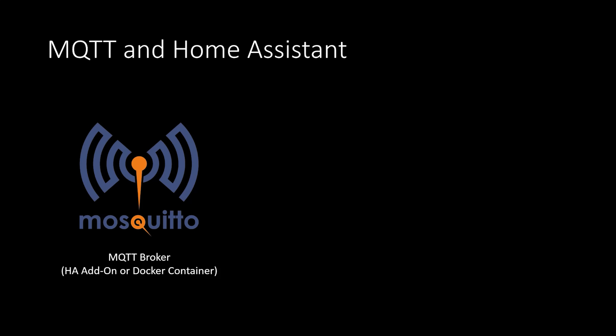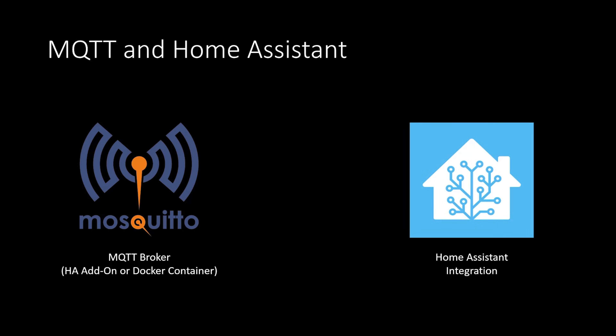I'll now show you how you can set up an MQTT broker called Mosquitto and use it with Home Assistant. There are two parts to this setup. First, you need to install and configure the MQTT broker itself. Then, once that's set up and running, you'll need to add the MQTT Home Assistant integration, which it uses to talk to the broker over IP on TCP port 1883.